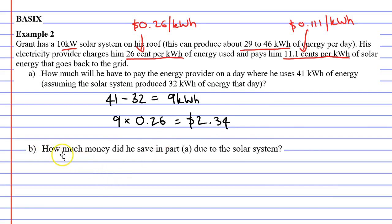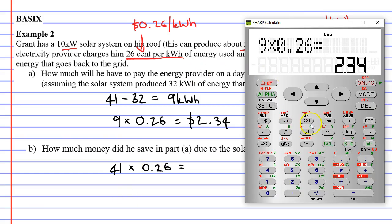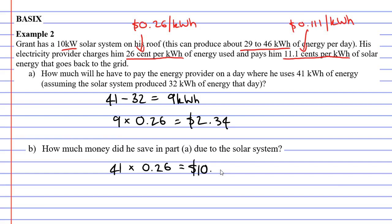Question B says, how much money did he save in part A due to the solar system? Well, let's see how much he would have got charged if he didn't have solar panels. So he used 41 kilowatt hours. Without the solar panels, that's what he would have been charged for. So what's 41 times 0.26? 41 times 0.26 gives us $10.66.